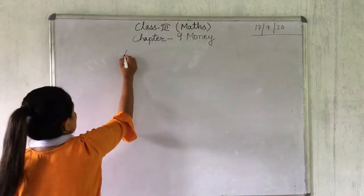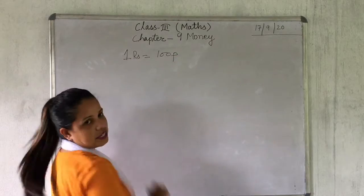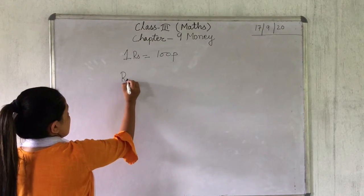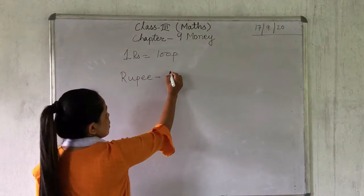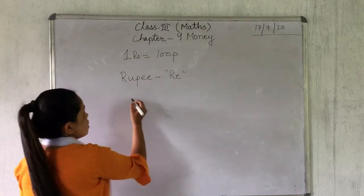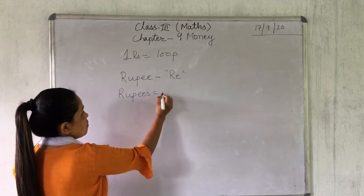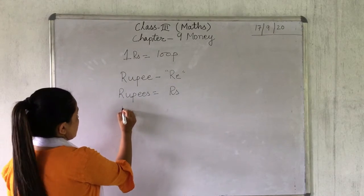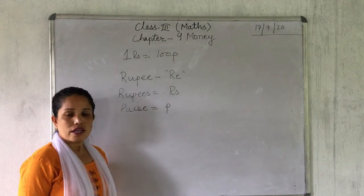1 rupee is equal to 100 paise. The short form of rupee — you can write it in short form as 'Re'. The short form of rupees — you can write it as 'Rs'. The short form of paise — you can write it as 'P'.